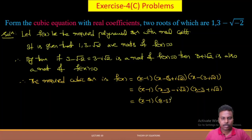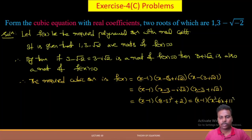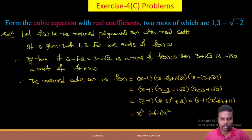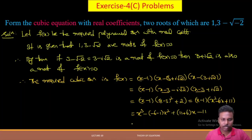Expanding: (x−3)² + 2 = x²−6x+9+2 = x²−6x+11. Multiplying out (x−1)(x²−6x+11): x³ coefficient is 1, x² coefficient is −6−1 = −7, x coefficient is 11+(−1)(−6) = 11+6 = 17, and the constant term is (−1)(11) = −11.